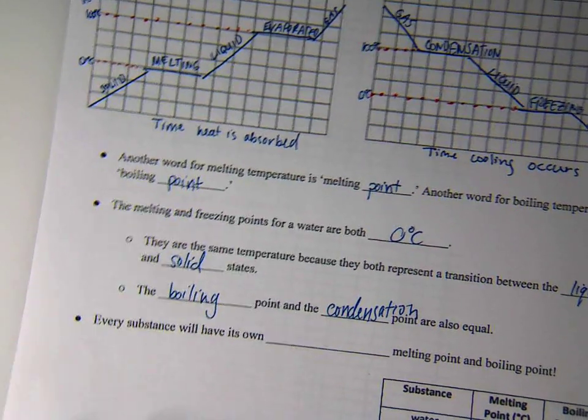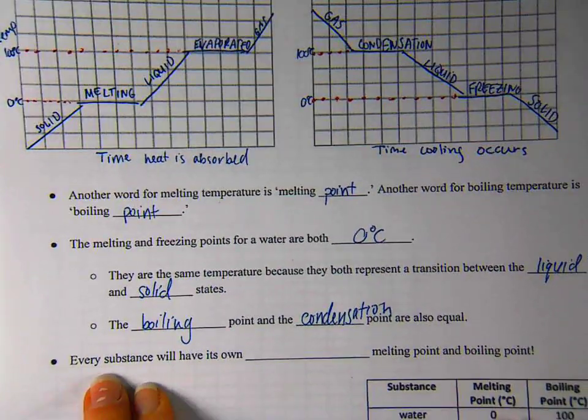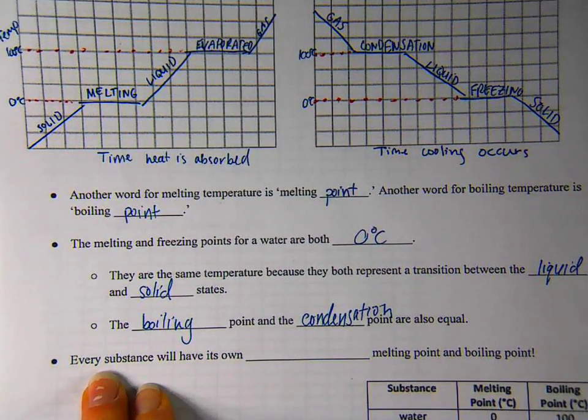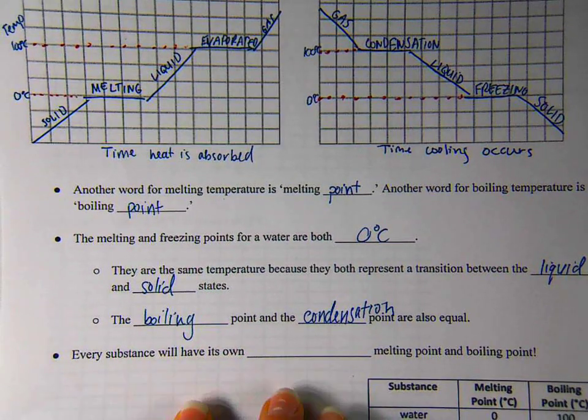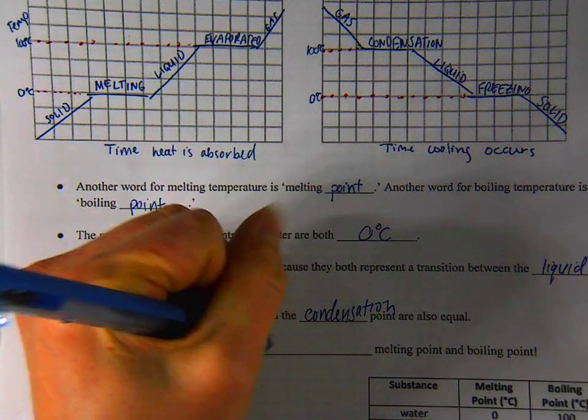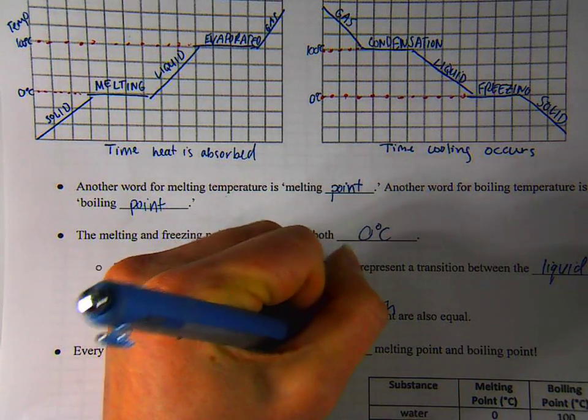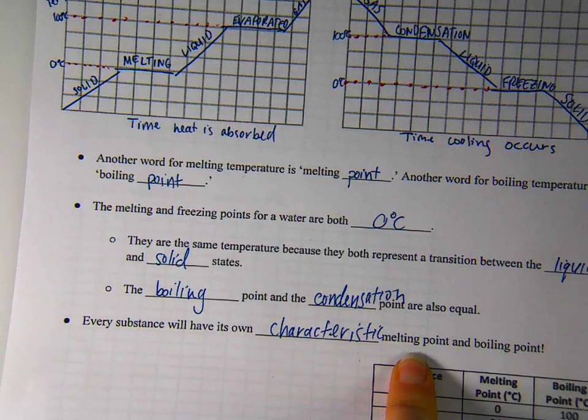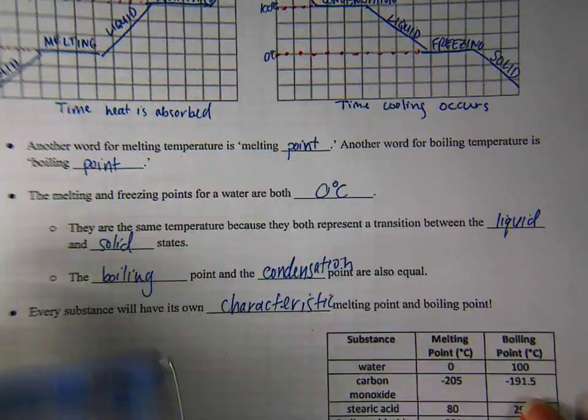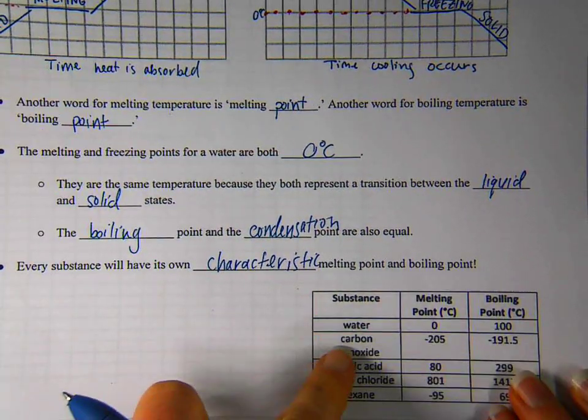So this leads me to a really important point for this unit. Every substance, any liquid substance, solid substance you can think of, it's going to have its own characteristic melting and boiling point. That means it will also have the same characteristic freezing and condensation points, but we just tend to call them melting and boiling points.